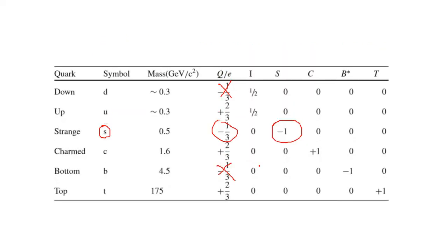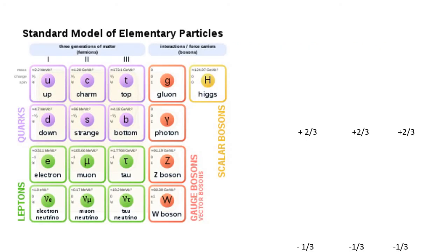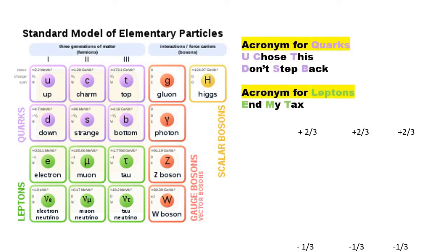If you want to remember the quarks, I have created a simple acronym for long-term memory. For quarks, repeat after me: 'You chose this, don't step back.' U for up, C for charm, T for top, D for down, S for strange, B for bottom.